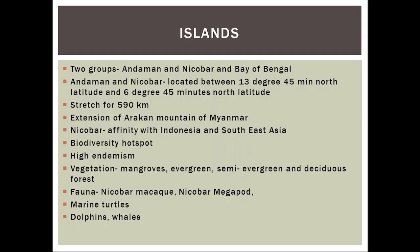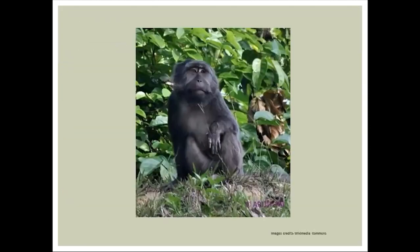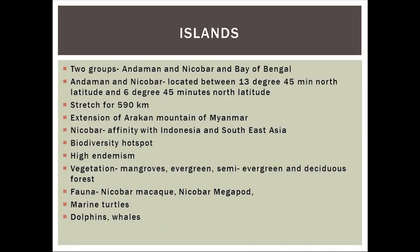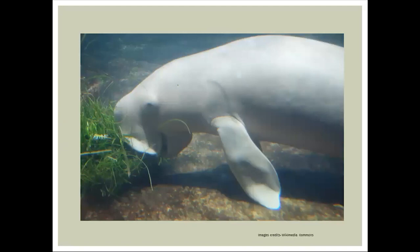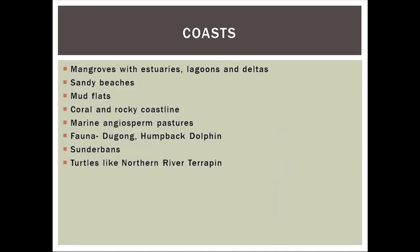There are two groups of islands: Andaman and Nicobar, and the Lakshadweep Islands. Remember the Nicobar macaque and Nicobar megapode. Vegetation includes tropical rainforests. The last biogeographic zone is the coast — one will find the Dugong and varied vegetation including mangroves. The Sundarbans are well known on the eastern coast, and turtle breeding occurs there. Remember the northern river terrapin — that covers all ten biogeographic zones.